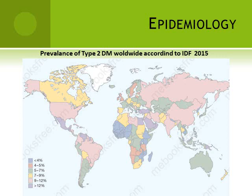This graphical geographical representation shows the prevalence of the disease. According to the International Diabetes Federation 2015 data, Pakistan falls in the country group where the prevalence was 7–9 percent, but as noted, the recent 2019 data shows the prevalence is much higher.